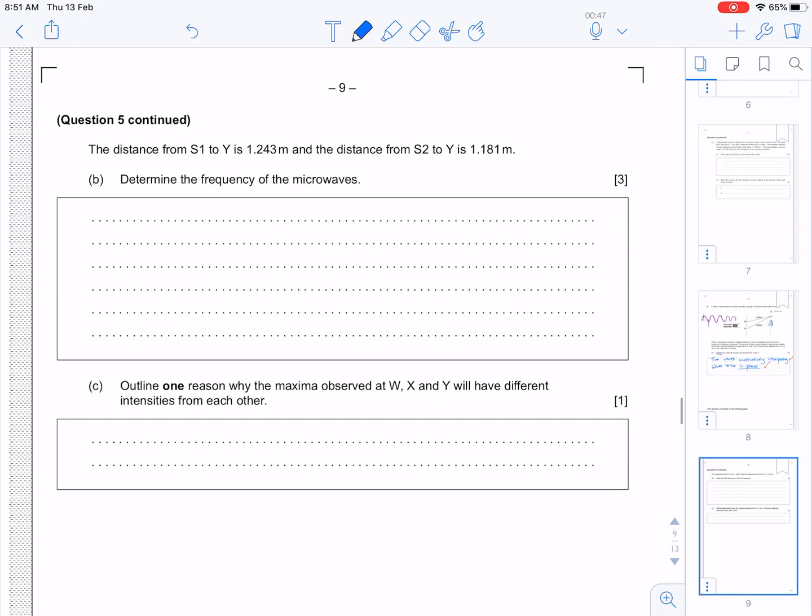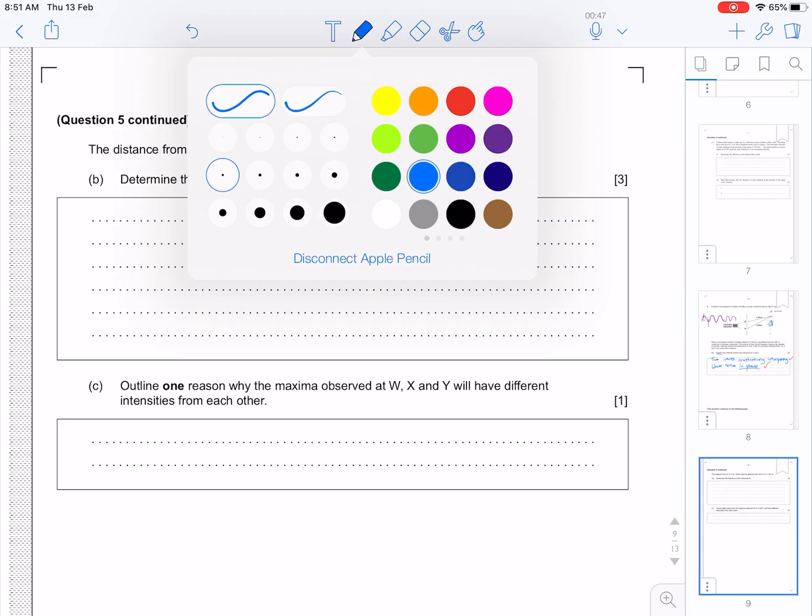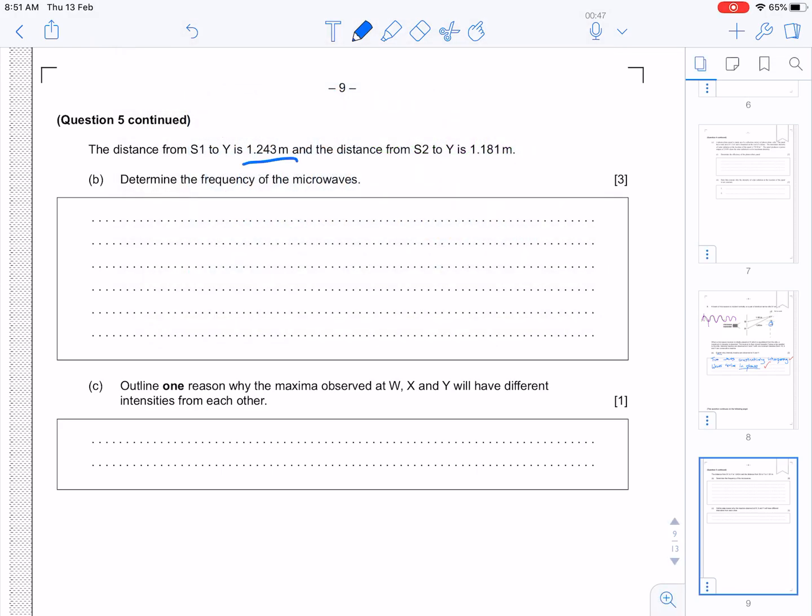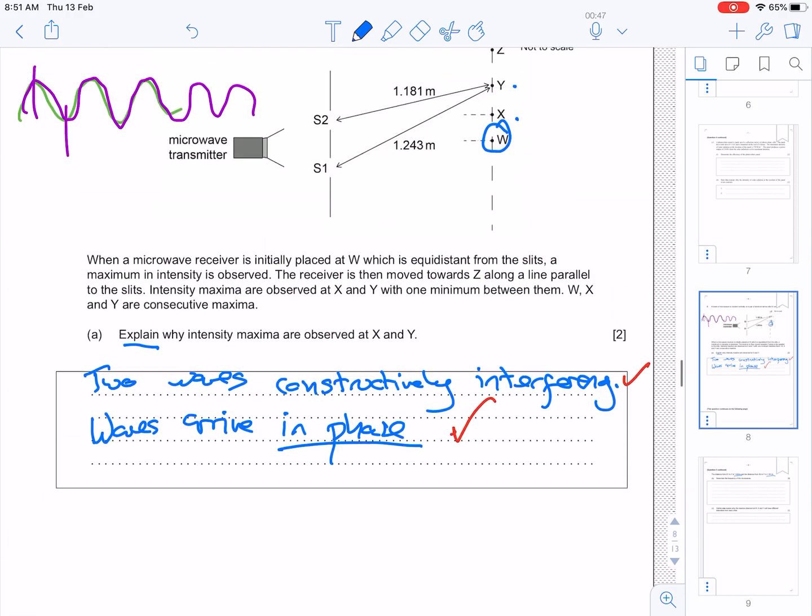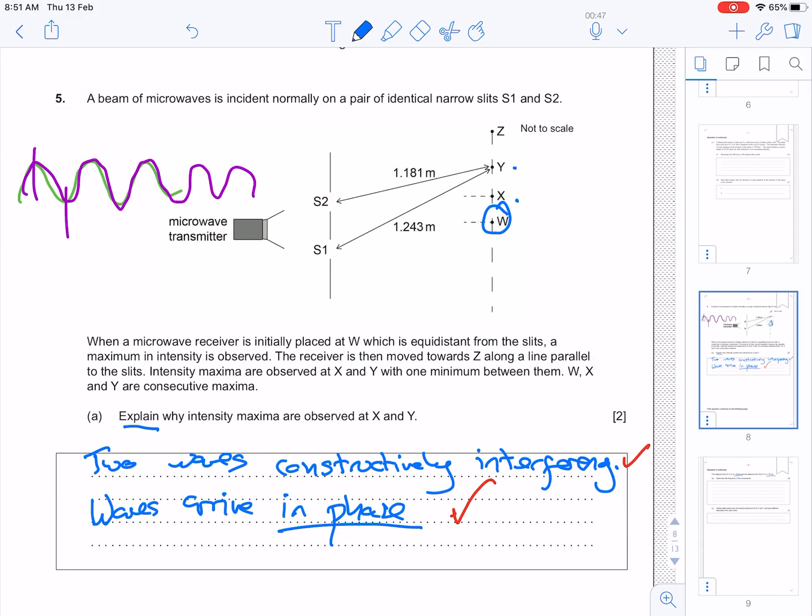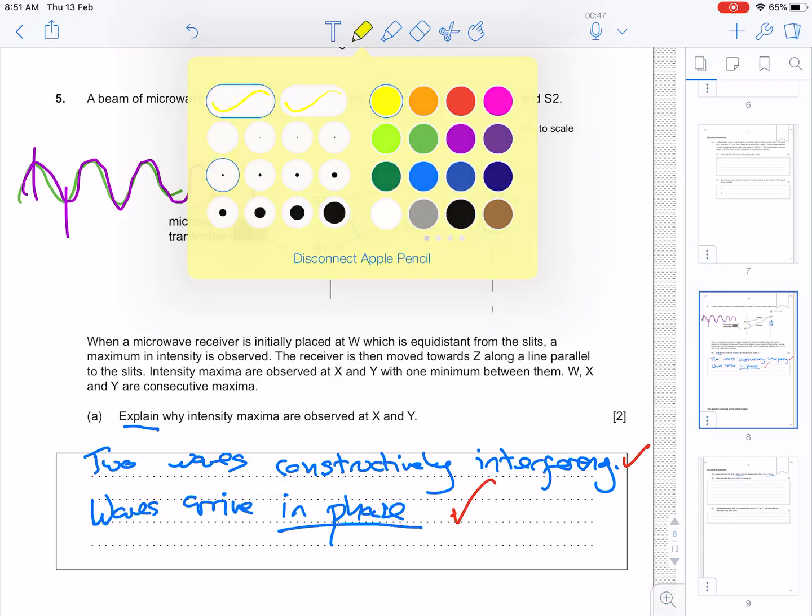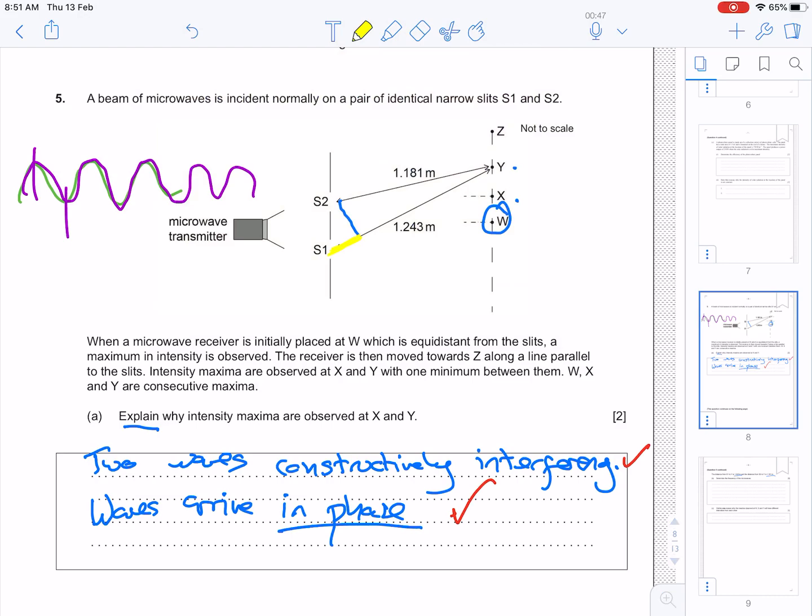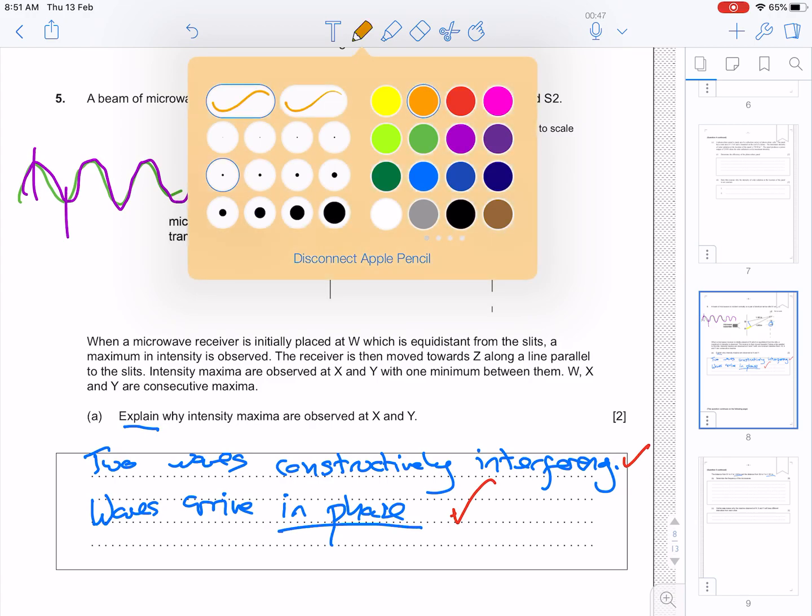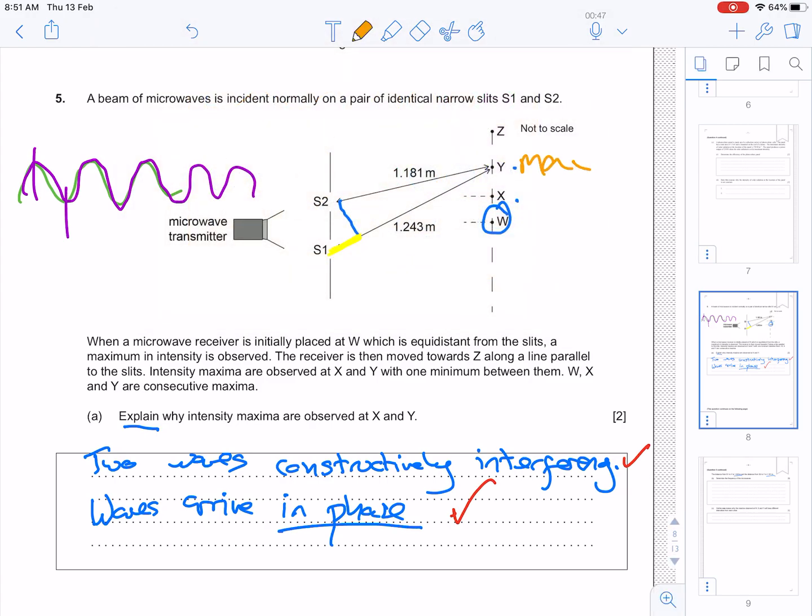And part B, the distance S1 to Y is 1.243, and S2 to Y is 1.181 metres. So, we're looking at these distances here and here, and we can imagine that the extra distance that the ray from S1 has travelled is this edge right here. So, for this to be a maxima at Y, which we're told it is, what do we know about this distance here?